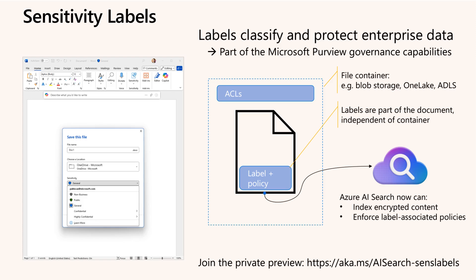Sensitivity labels powered by Microsoft Purview add further security by embedding classification and policy restrictions within documents, such as marking documents confidential or public and controlling extractability and access. Handling these encrypted, policy-rich documents poses indexing and retrieval challenges. The session announced private preview support for automatic decryption, indexing, and enforcement of sensitivity labels within Azure AI Search Connected Storage, easing developers' burden and enabling compliant, secure AI solutions.